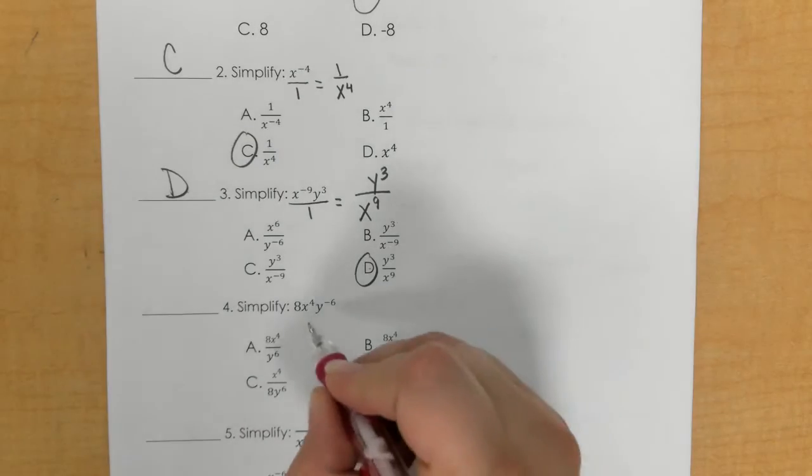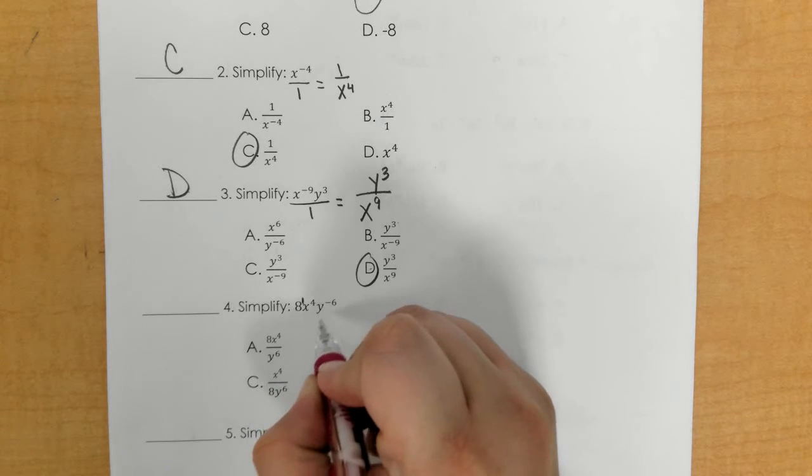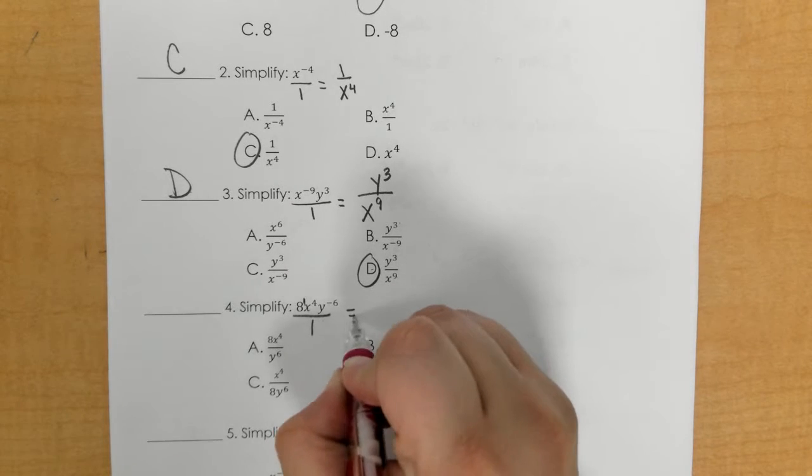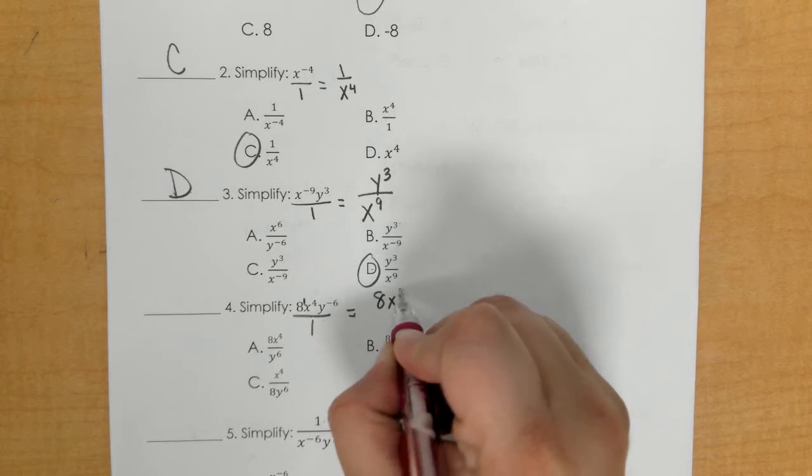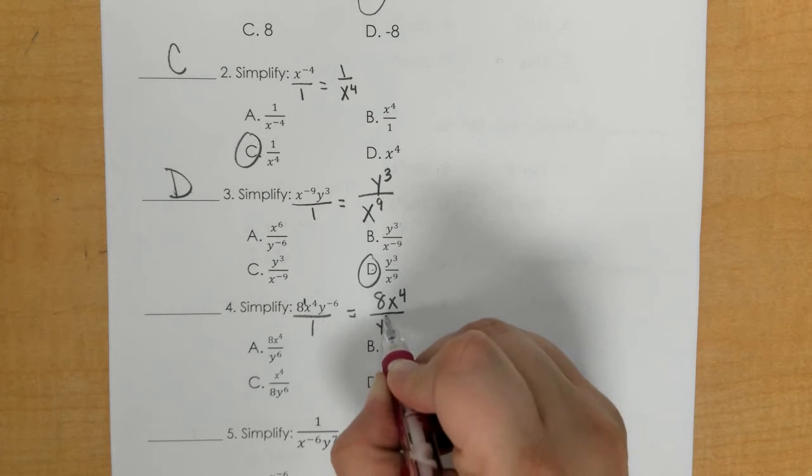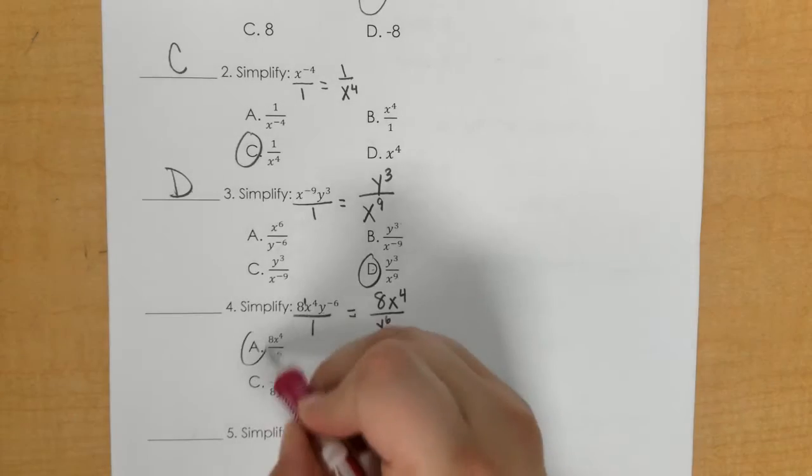Number 4, we have 8 to the 1st power, x to the positive 4, and y to the negative 6. We're going to move the y down, so 8x⁴ will stay. y to the negative 6 moves to the bottom and becomes positive. So this would be letter A.